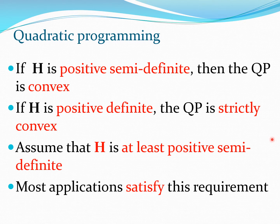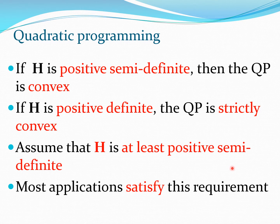Using our knowledge of optimization, if H is positive semi-definite then the QP is convex, and if H is positive definite then the QP is strictly convex. For most realistic problems H is at least positive semi-definite, and many applications satisfy this requirement because in a well-posed minimization problem you reduce the cost function as you progress, making a positive semi-definite H matrix likely at any given point.